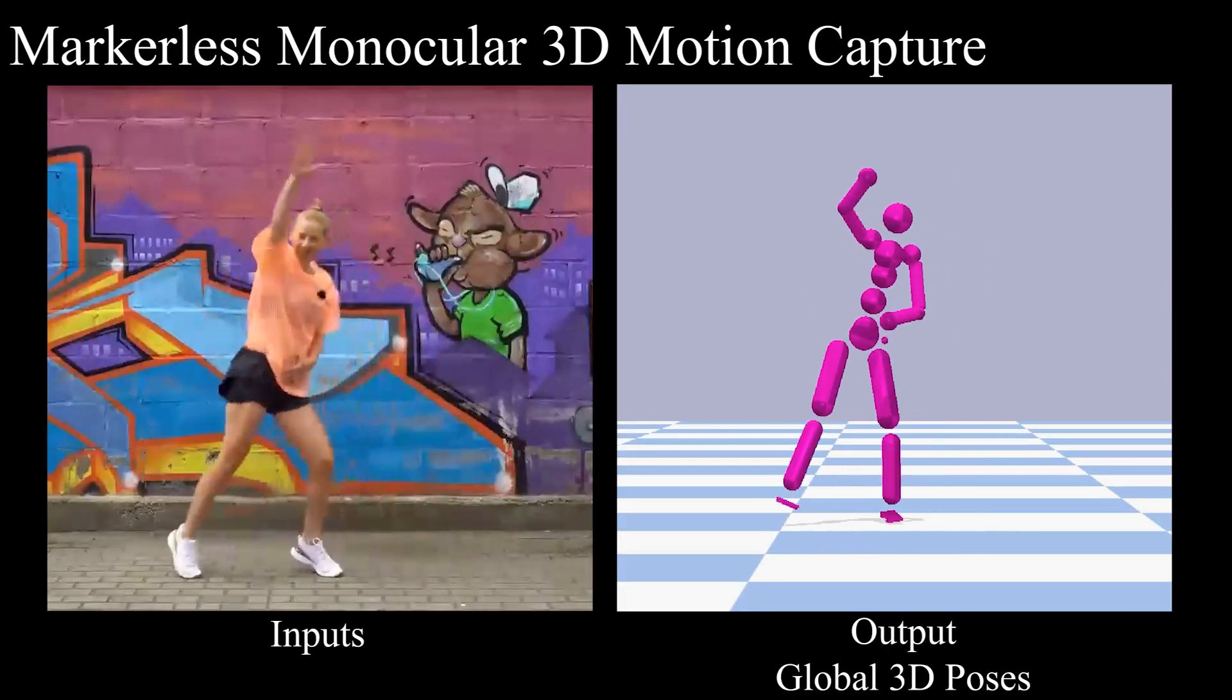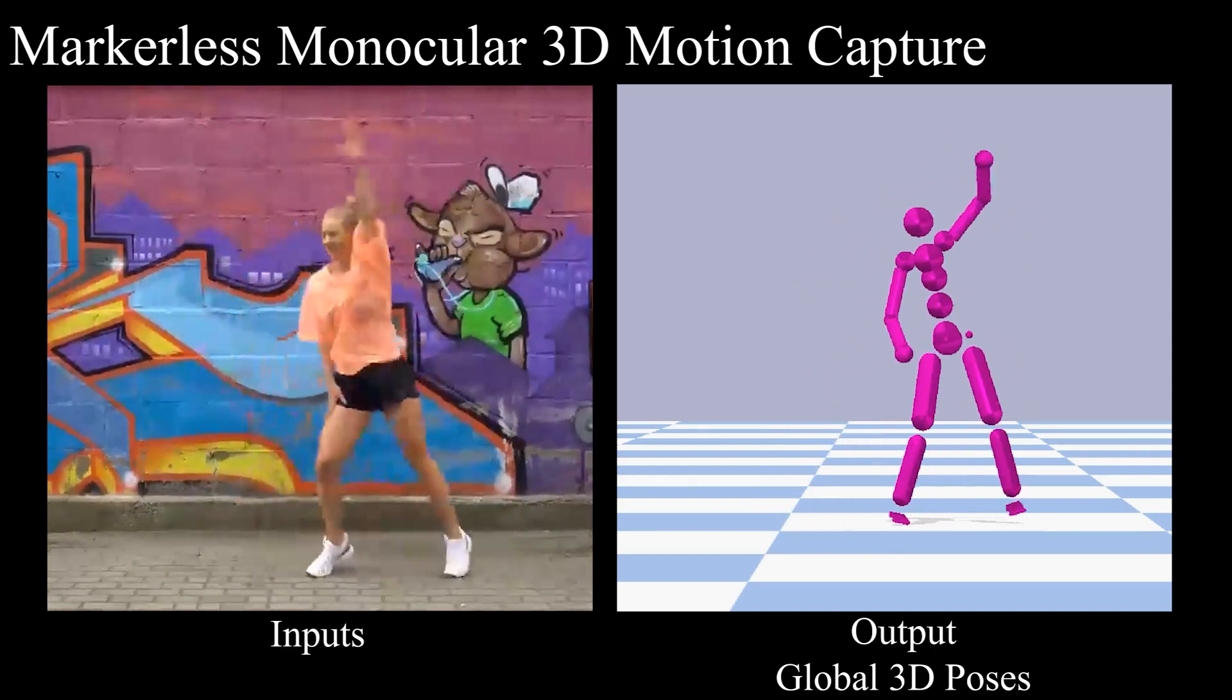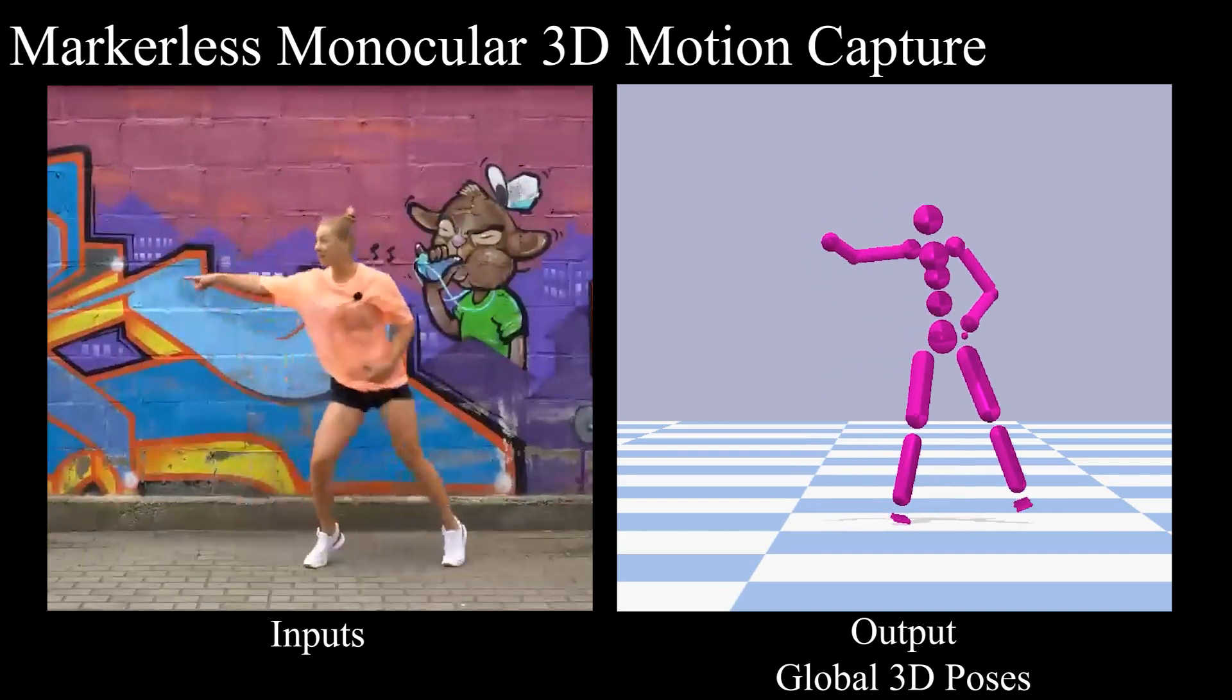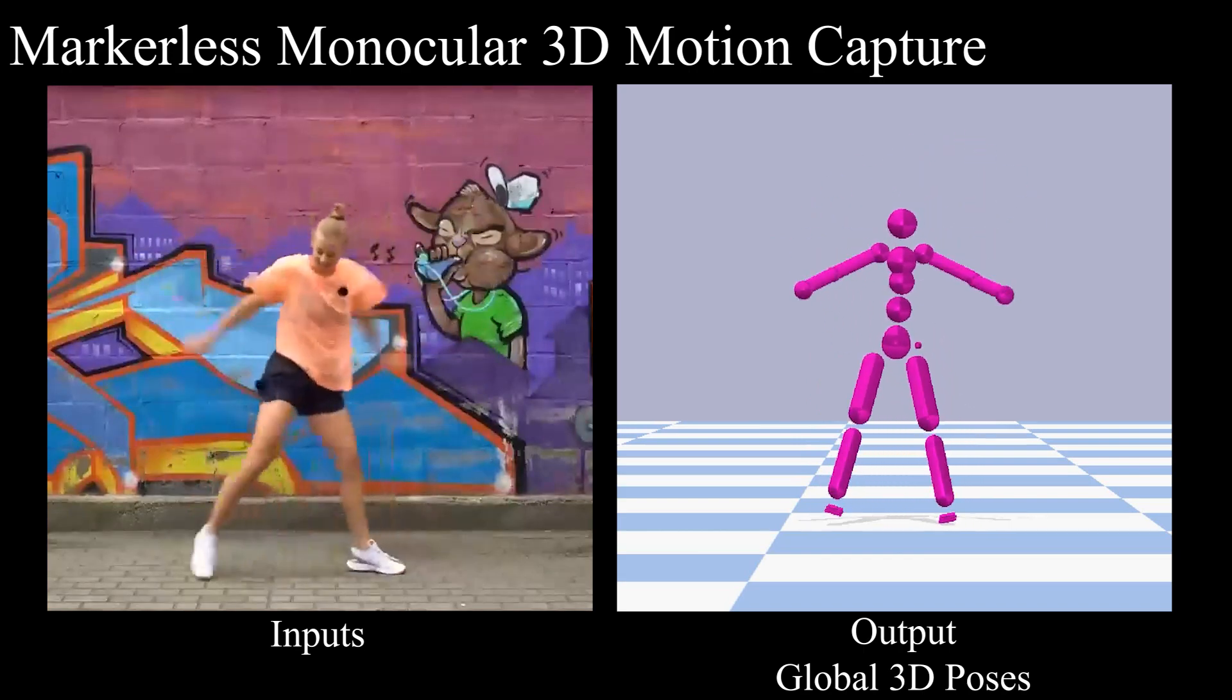The objective of monocular 3D human motion capture is to estimate the global position of a human skeleton, along with its joint angles, from a monocular video. It has been a very active research area during recent years, with many methods proposed in the literature.